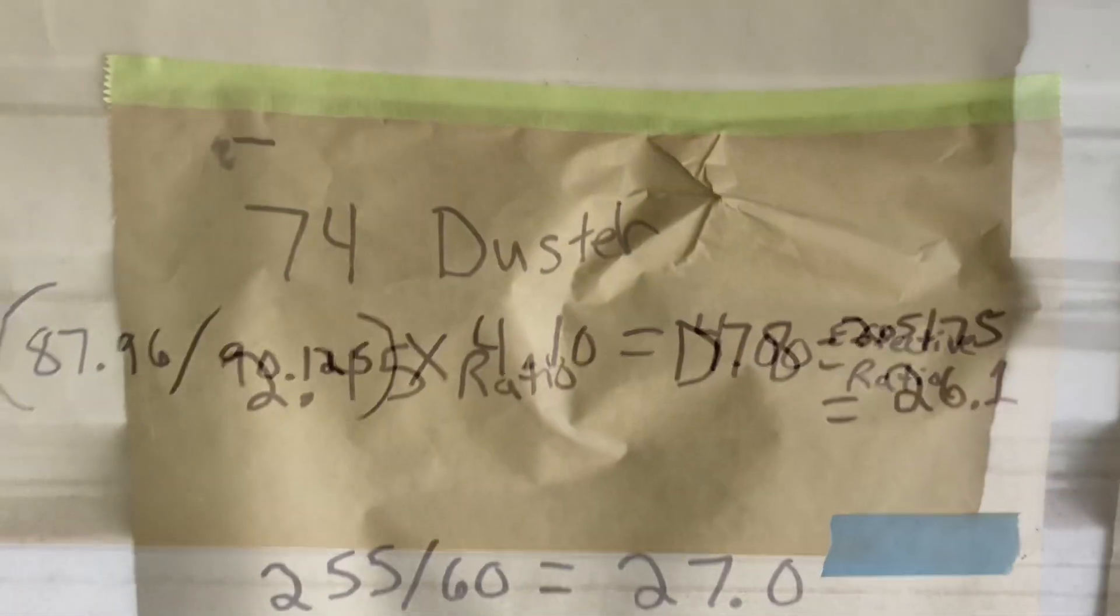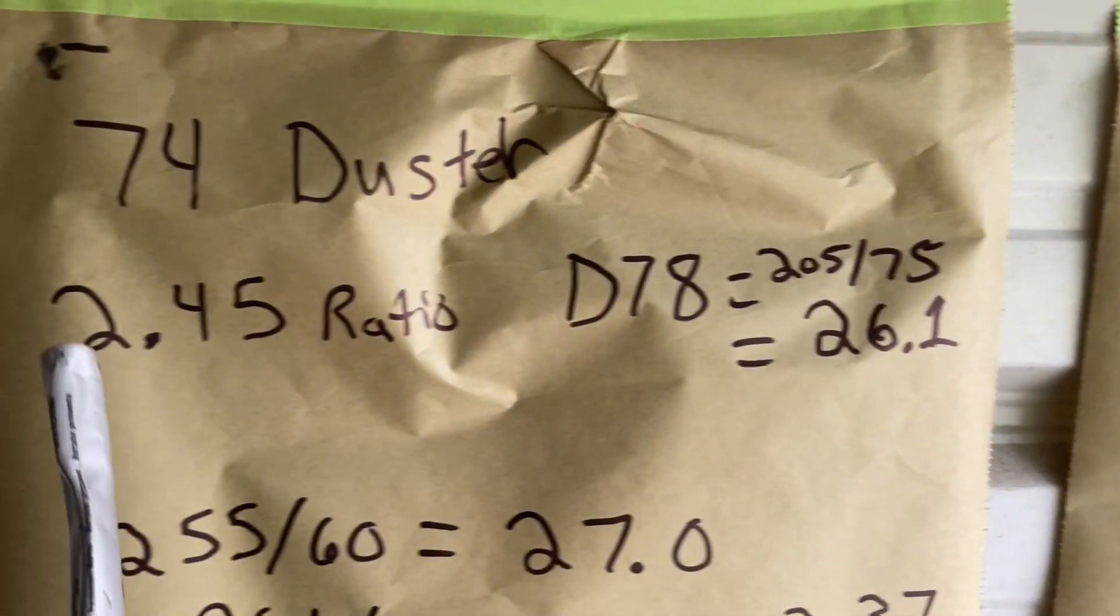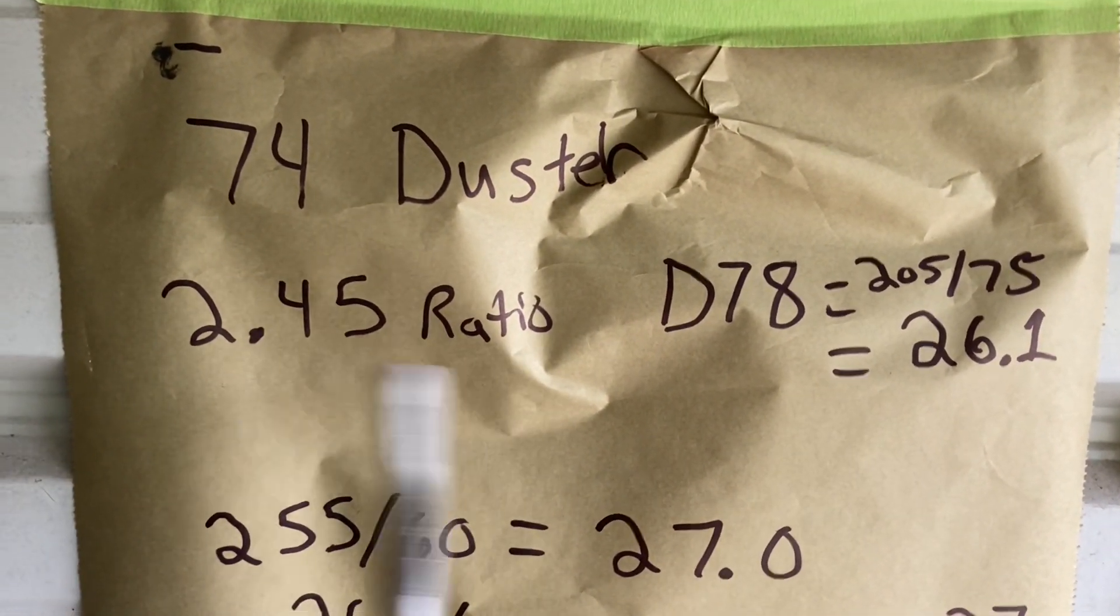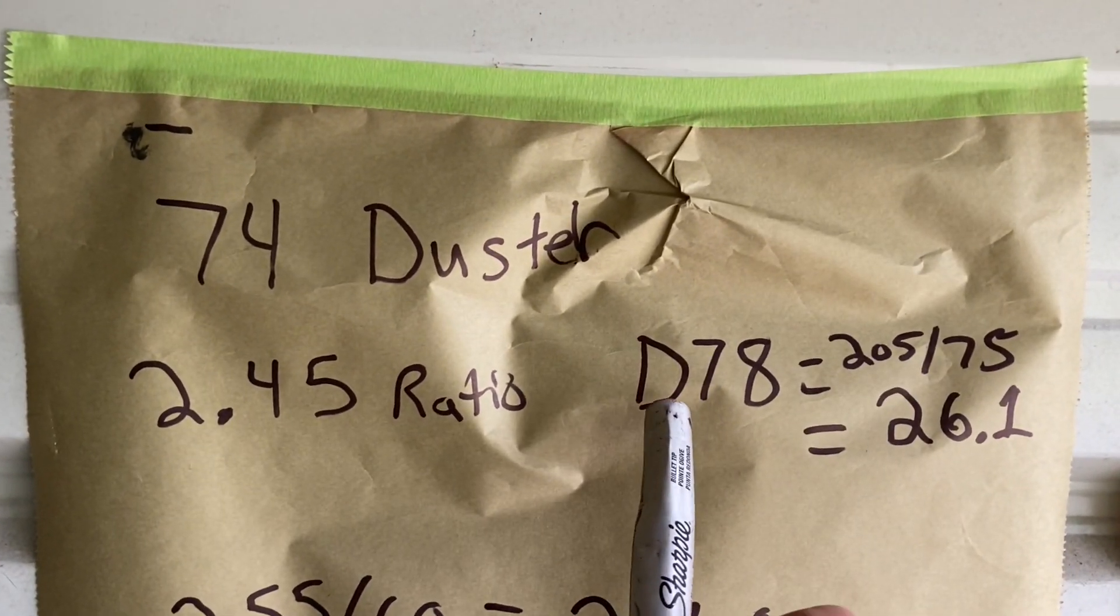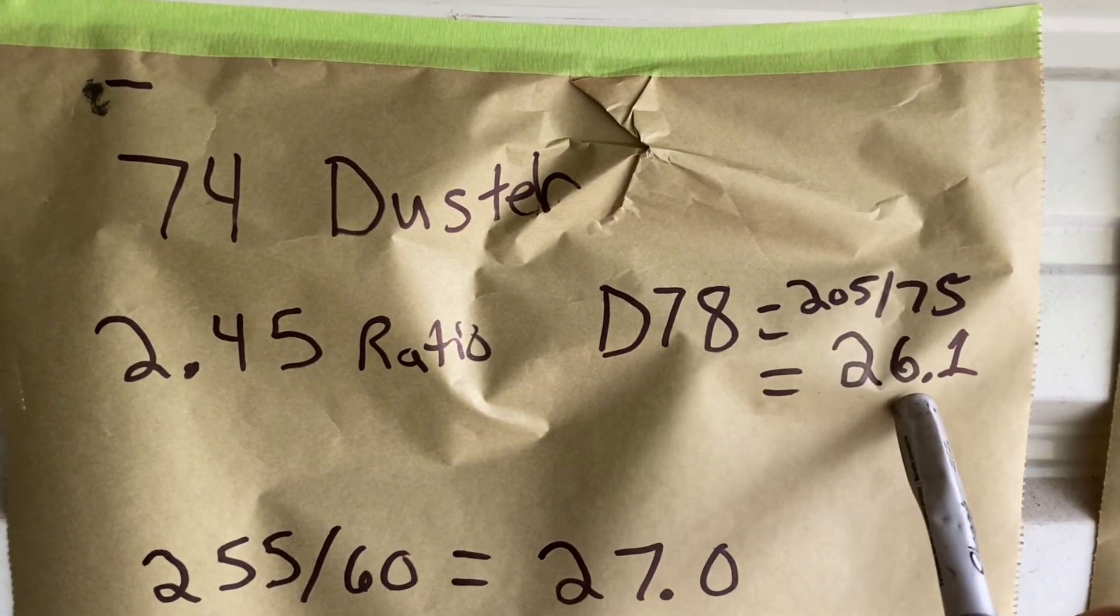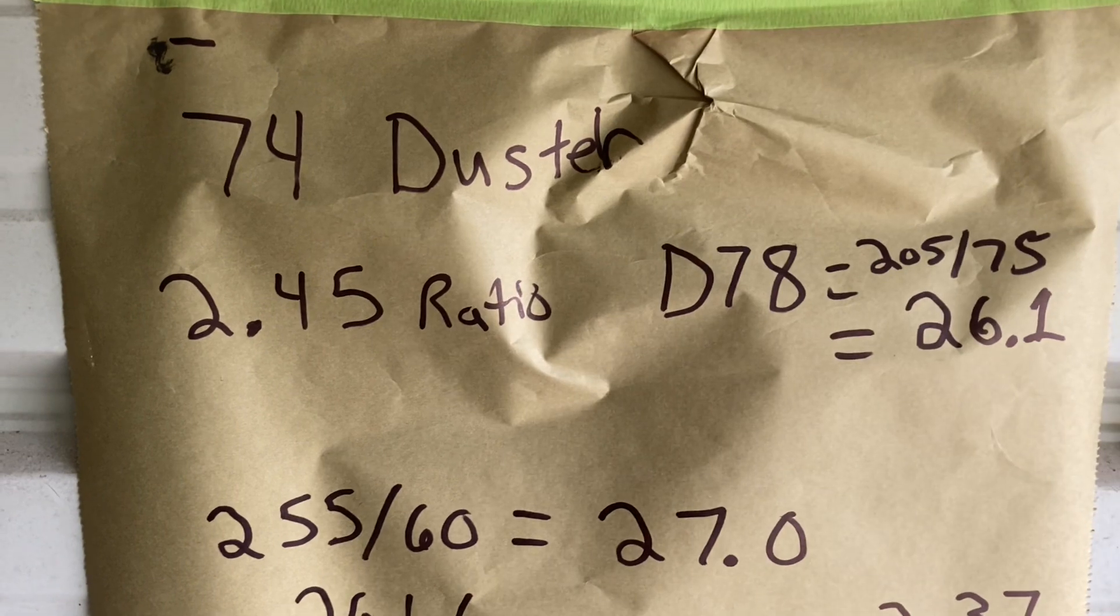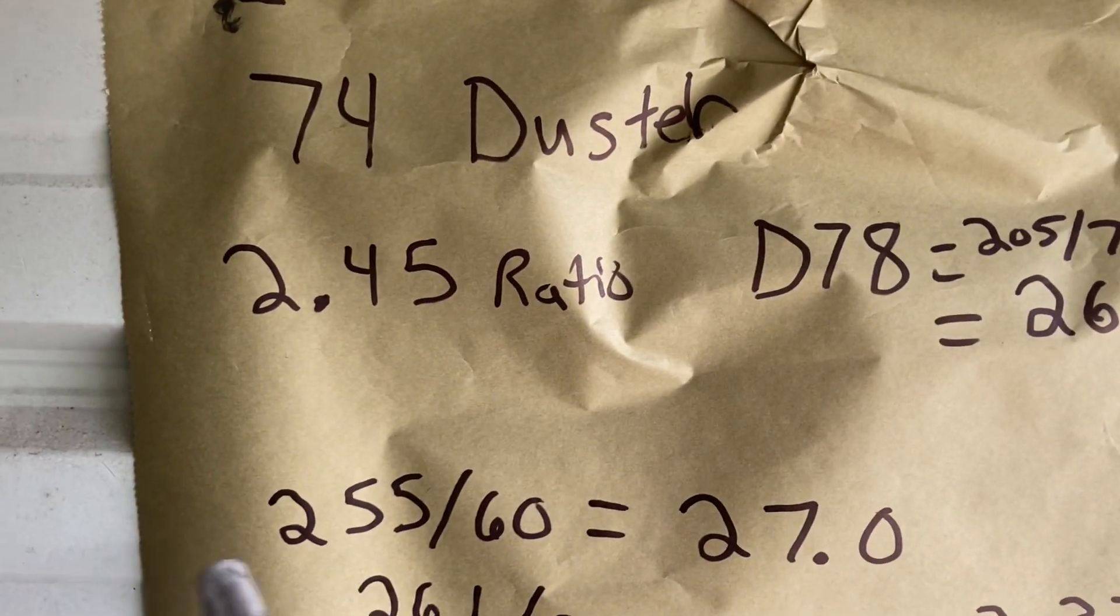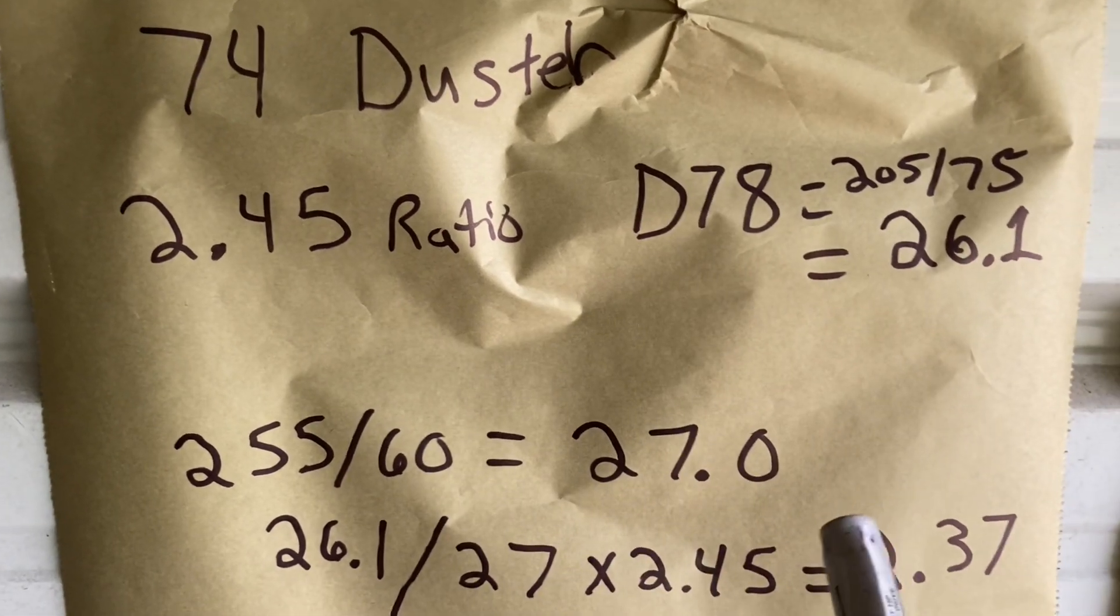Here's how it can help you. Here's an example. Say you've got a 74 duster that came factory with a 2.45 ratio. That's a very high ratio for highway driving. It had a D78 size tire, which is actually a 205/75, and it has a diameter of 26.1. You decide you're going to go to the racetrack and you need bigger tires. So you go to a 255/60 on the back. That gives you a 27 inch tall tire.